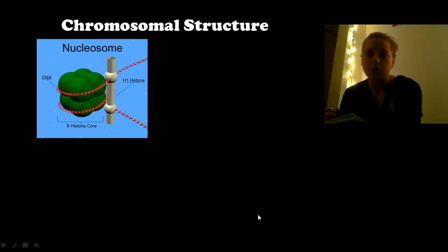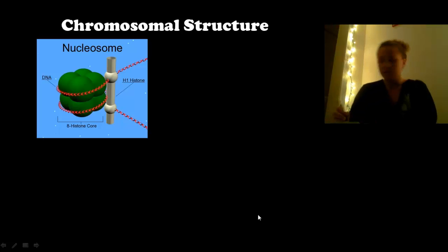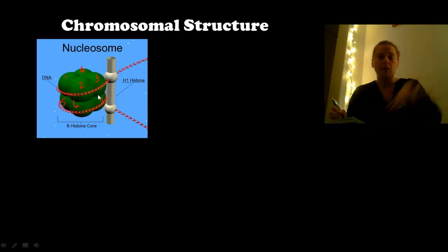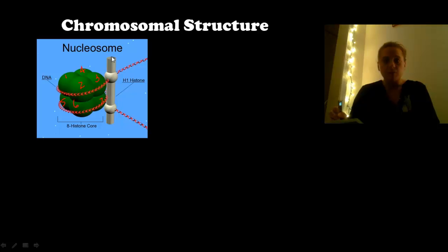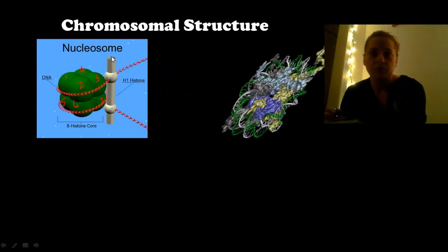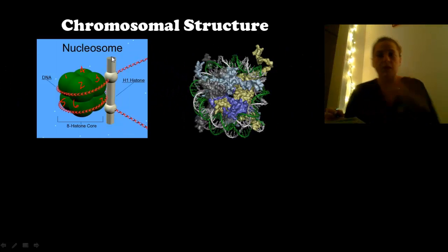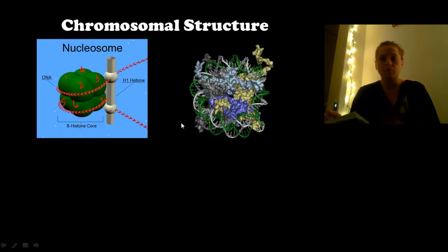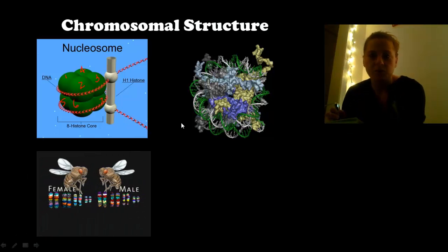A little bit more on the structure: there's your nucleosome with the eight histones — one, two, three, four, five, six, seven, and eight hiding behind. DNA wraps around twice, forming your nucleosome. In a space-filling model, you can see all eight proteins with the double helix of DNA wrapped right around it. It's pretty cool looking.